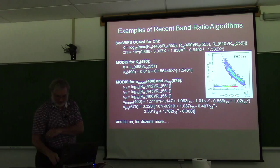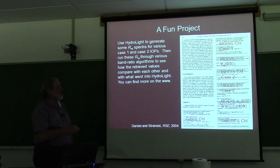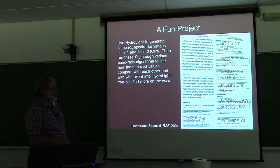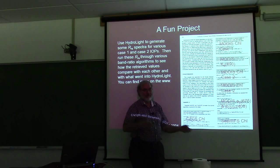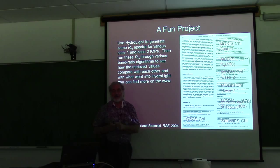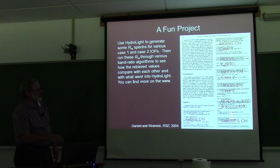Here's a fun little project: run Hydrolight, generate a bunch of RRS spectra. Pick the new case 1 model, put in chlorophyll of 2.5, generate the spectrum. Then take those band ratios and plug them into the CZCS chlorophyll formula, the MODIS chlorophyll formula for case 1 water, and the CWIFS chlorophyll formula, and see how different the estimates are for the exact same spectrum — then compare back to what chlorophyll you put into Hydrolight. It can be pretty scary to see the wide range of numbers you get. There's a paper by Derricky and Stramsky that compares all these different formulas.